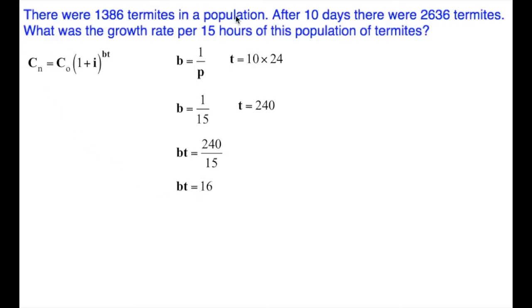Let's fill in everything we know. The C sub n is 2,636 termites, and the C sub 0, the initial number of termites, is 1,386. We have 1 plus our growth rate, we don't know the growth rate, to the power of 16, bt.